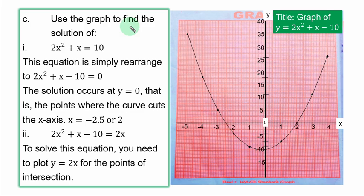See part C of the question. Use the graph to find the solution of Roman figure 1: 2s squared plus s equal to 10. One thing you must note is that you can only use this graph to solve any equation that must be simplified to this. You simply transfer plus 10 to the left hand side, and you have 2s squared plus s minus 10 equal to 0.